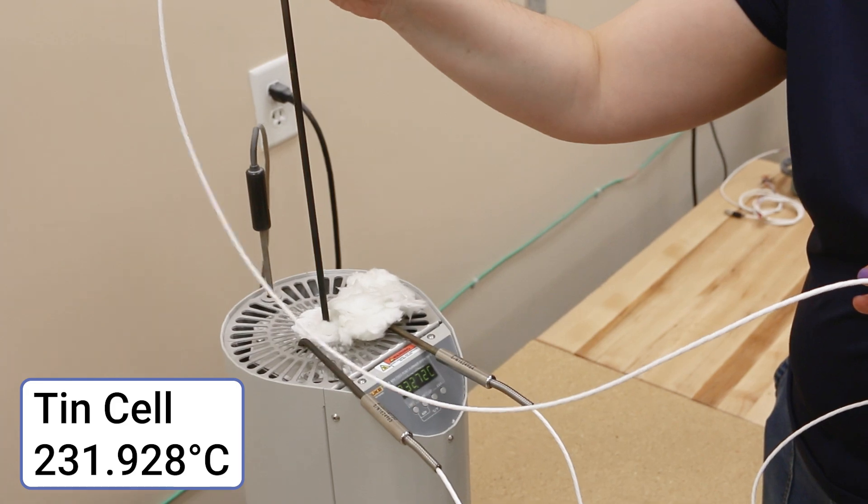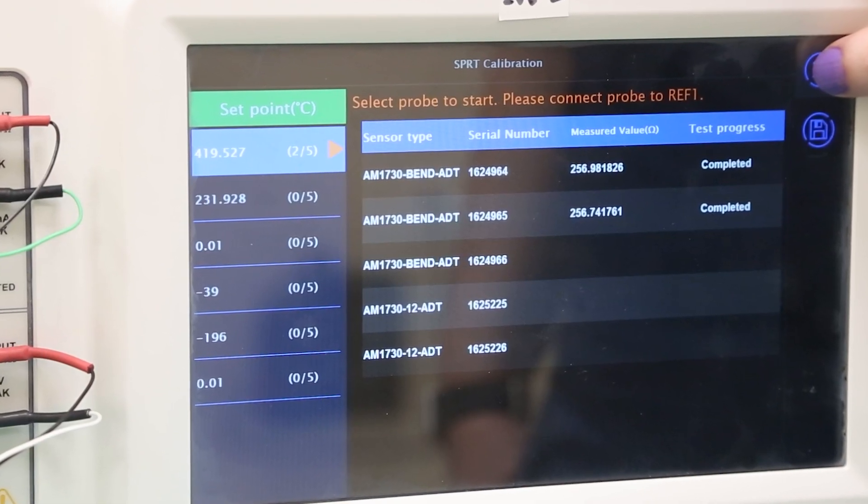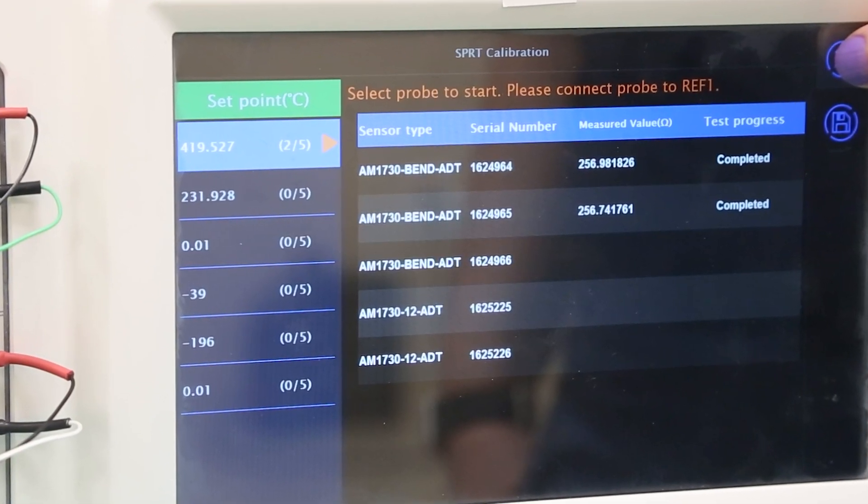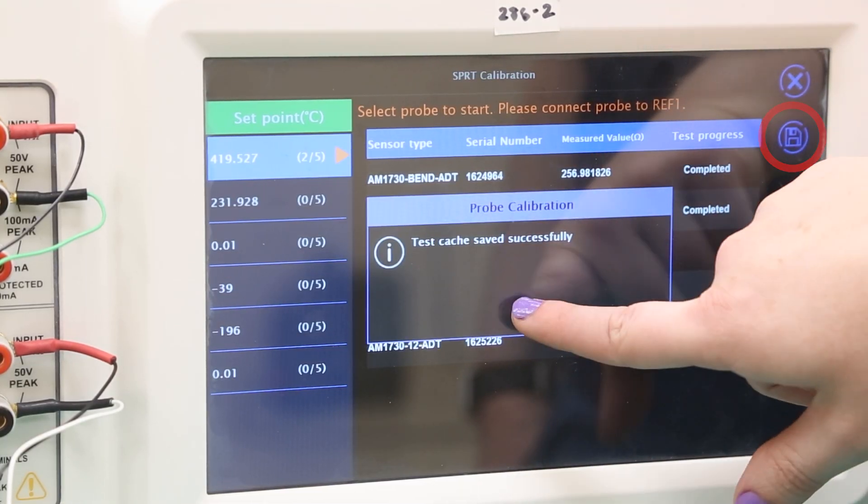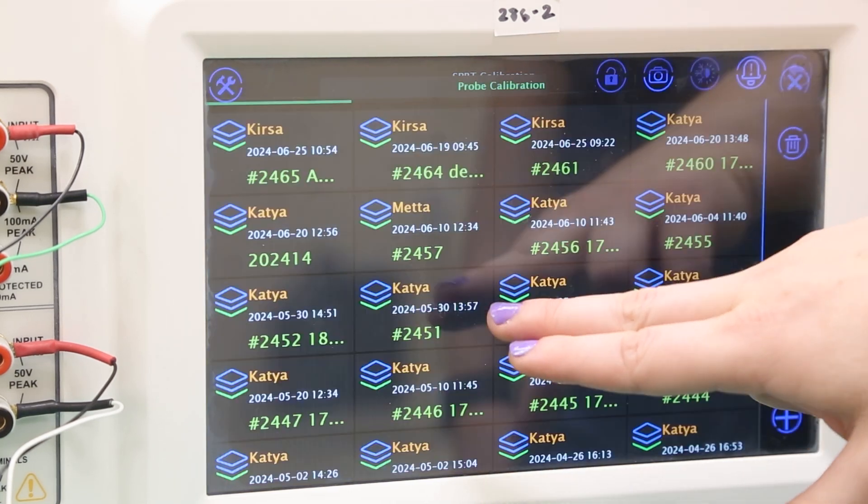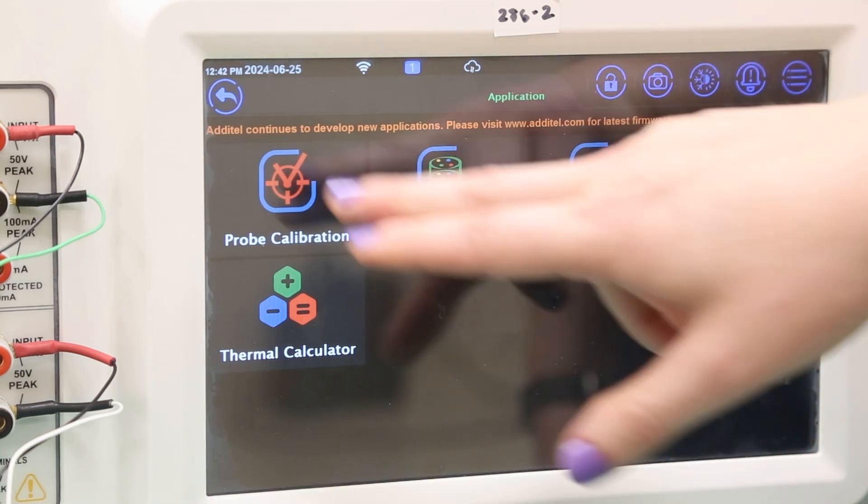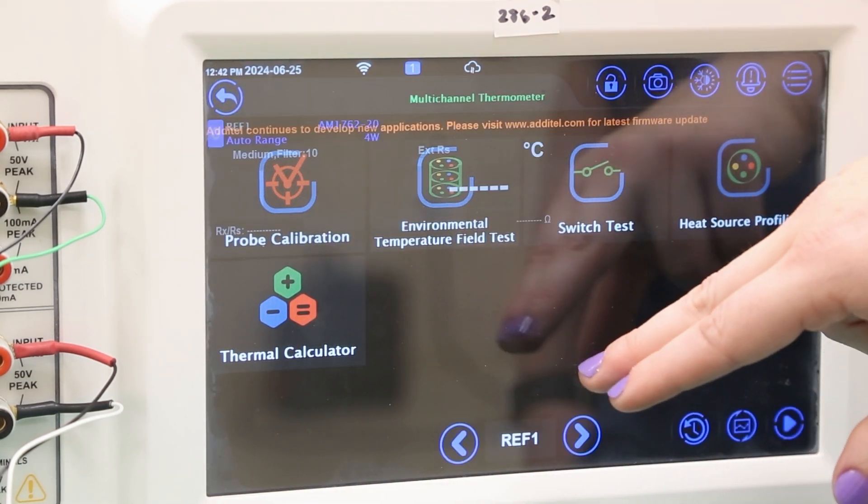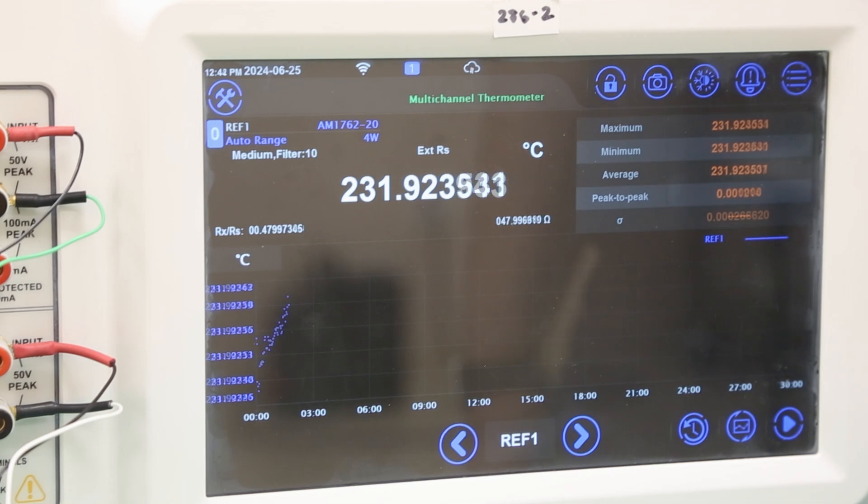One of the advantages of the fixed point program on the 286 is that any probe can be measured at any calibration point in any order. To do this, first save the test cache on the current calibration by pressing the save icon. You can now close the test and return to the multi-channel thermometer application. After inserting the reference thermometer into the tin cell, repeat the process of waiting for the temperature to stabilize by clearing statistics and checking the average and peak-to-peak values shown on the 286.